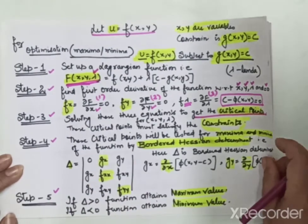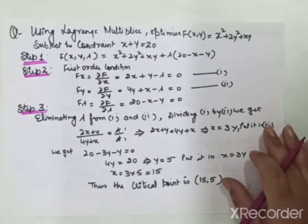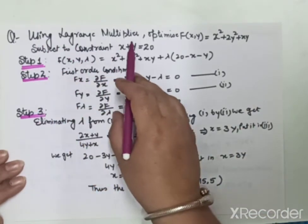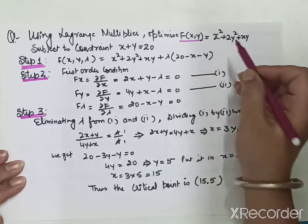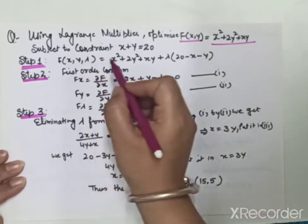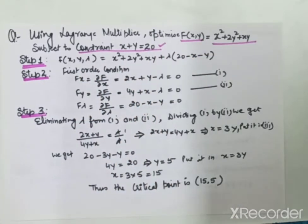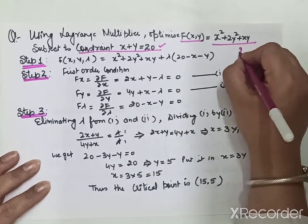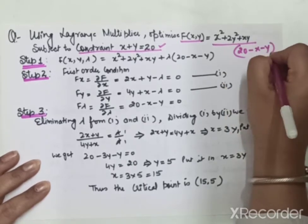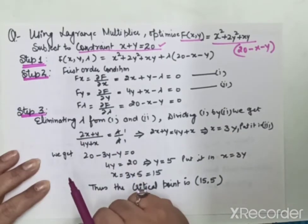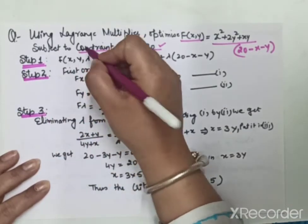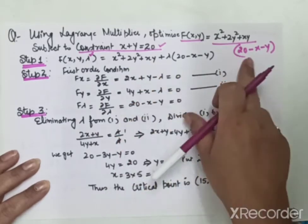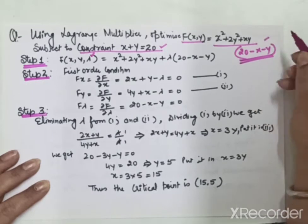Now we will apply these steps to an example. Using Lagrange's multiplier, optimize the function f = x² + 2y² + xy subject to the constraint x + y = 20. Step 1: we introduce lambda and set up the Lagrangian function as x² + 2y² + xy + λ(20 - x - y).